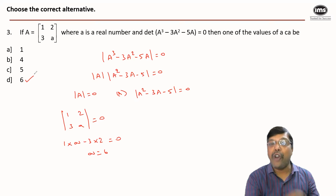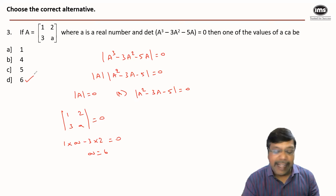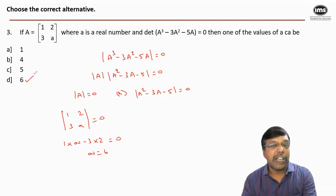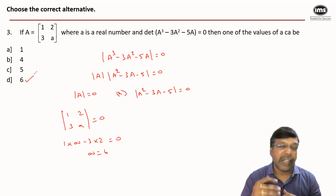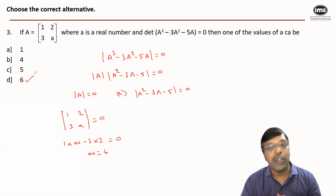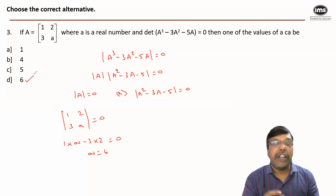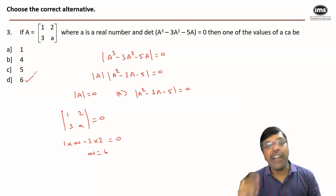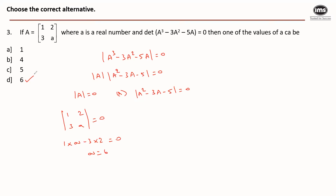In case 6 is not in the answer options, we would resort to the second condition: det(A² - 3A - 5I) = 0, and from there try to find the suitable values for a.